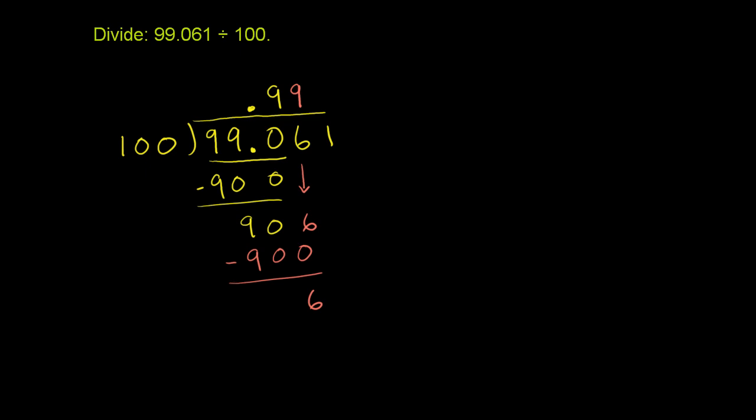And then we bring down the 1. 100 goes into 61. It doesn't. It goes into it 0 times. 0 times 100 is 0. And then when you subtract, you have a remainder of 61.